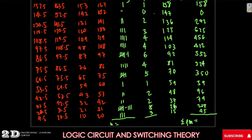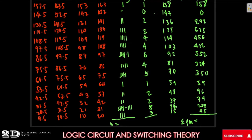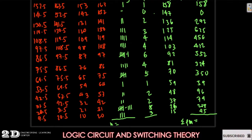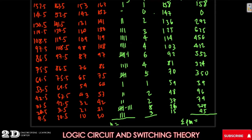Now we will go to the continuation of getting the variance and the standard deviation of group data. In the last part of the video we managed to get the frequency times the midpoint, and we are on our way to getting the mean of the group data, because it will be needed in getting the variance and standard deviation for group data.